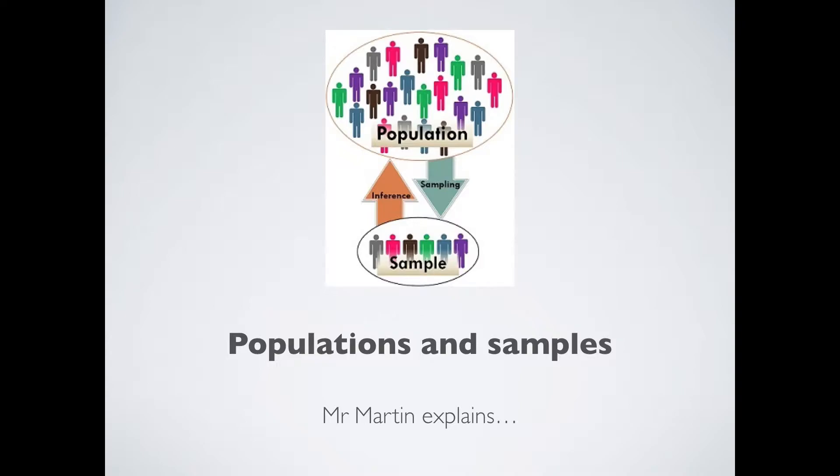Now, psychology is primarily a subject to do with human beings and human behaviour. So if we're going to do any experiments, if we're going to want to know anything at all, then we're going to need some humans to do experiments with. Where do we get those humans from, and what are the pros and cons of different methods of sampling? That's what we're going to be looking at in this video.